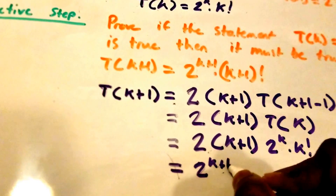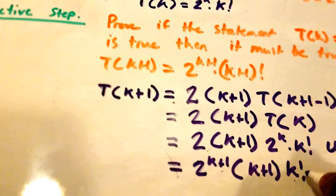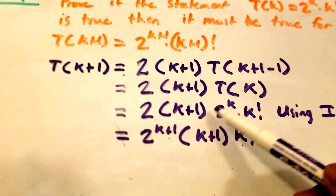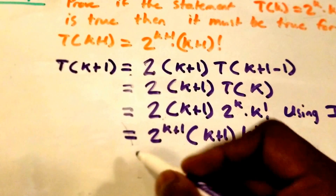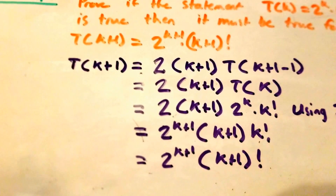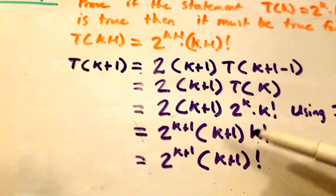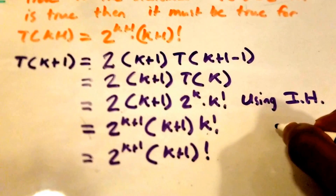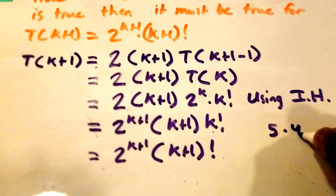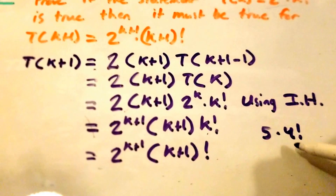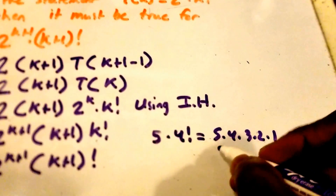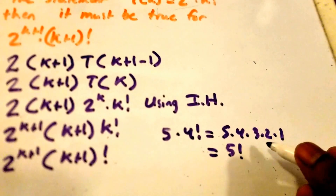This equals 2 to the k plus 1 times k plus 1 times k factorial — multiplying 2 by 2 to the power of k gives 2 to the power of k plus 1. And this equals 2 to the k plus 1 times k plus 1 factorial, because k plus 1 times k factorial equals k plus 1 factorial. For example, 5 times 4 factorial equals 5 times 4 times 3 times 2 times 1, which is just 5 factorial.